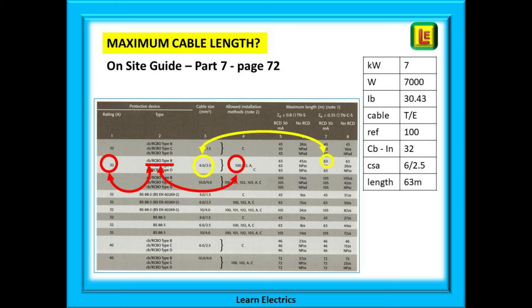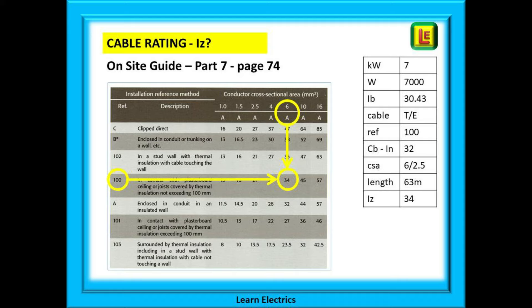This tells us that the cable should be 6 millimetres with a 2.5 millimetre earth, shown in a yellow circle on this page. Now assuming our earthing system is TN-CS — the second column from the right — this tells us the maximum length of cable run to avoid a voltage drop problem. In this case 63 metres, again circled in yellow. Finally we go to page 74 and check the maximum current rating or IZ for our 6 millimetre cable. With reference method 100 and a cable size of 6 millimetres the maximum current rating is 34 amps.